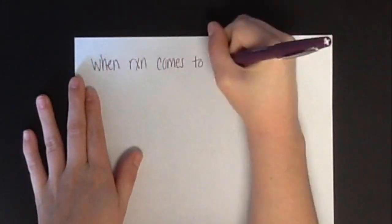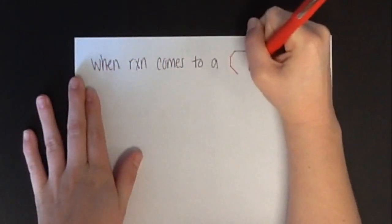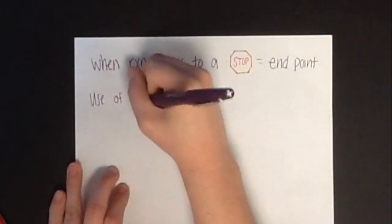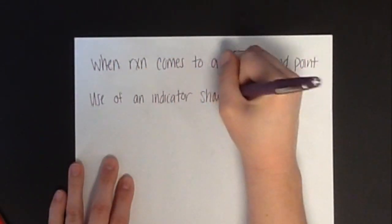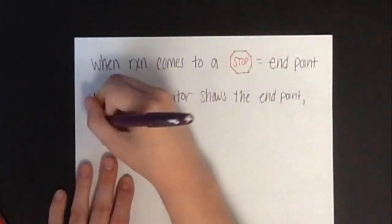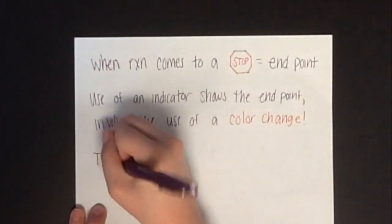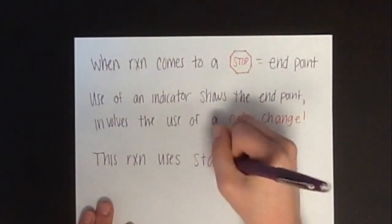When the reaction stops, this is known as the end point. The use of an indicator helps to show the exact amount of when the reaction stops. In many cases, the indicator will change colors to show that the reaction is complete. For this reaction, we will be using starch as our indicator.